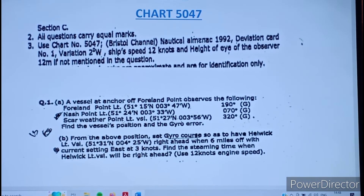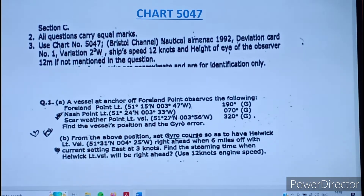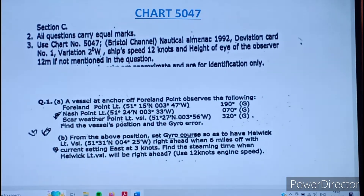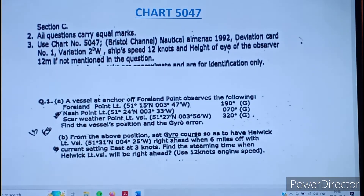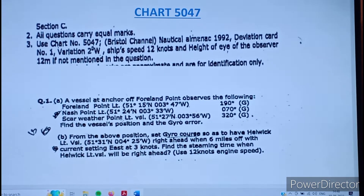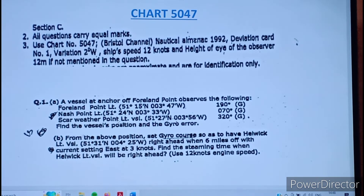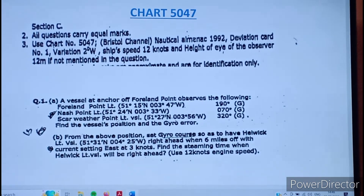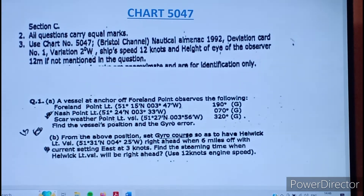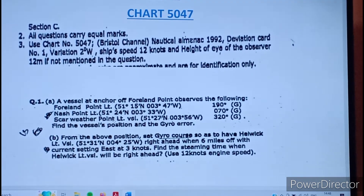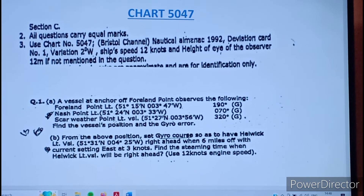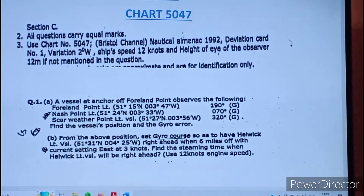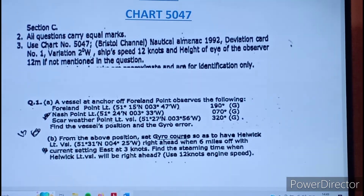Moving to the next part of the question: from the above position, set gyro course — Helwig Light Vessel was right ahead with 6 miles off, with current setting east at 3 knots. Find the steaming time when Helwig Light is 12 miles off and right ahead, using 12 knots engine speed. The first part uses HSA — Horizontal Sextant Angle — from which we get the fix, and from the fix the second part begins.